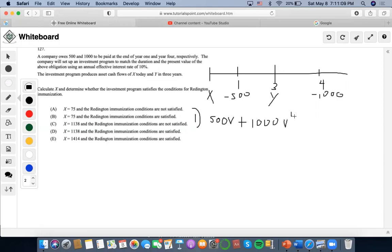I'm going to calculate this at an effective rate of 10 percent. I'm going to do 500 times V to the negative one plus 1000 times V to the negative four.